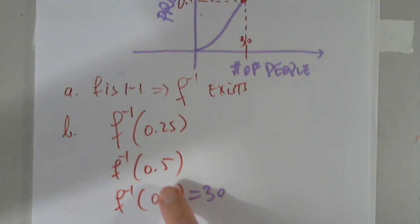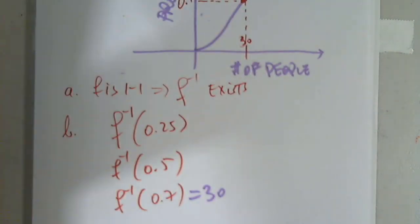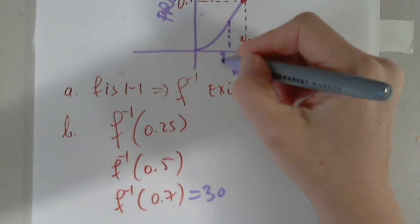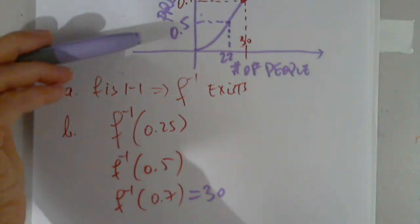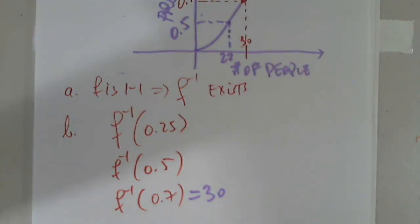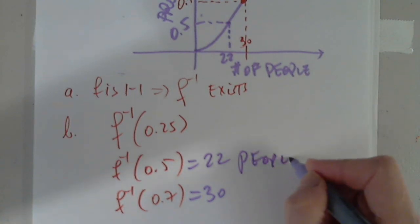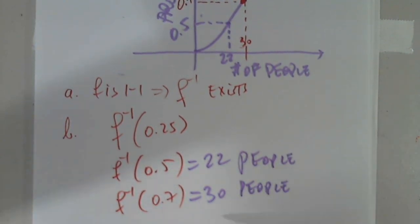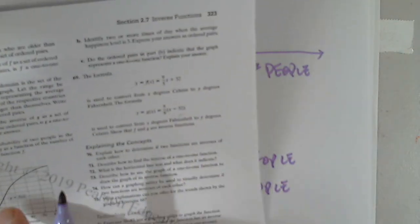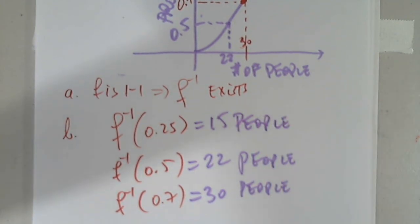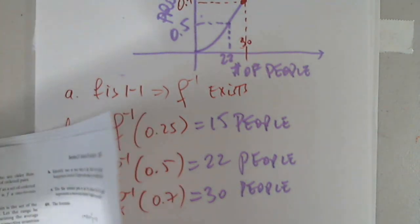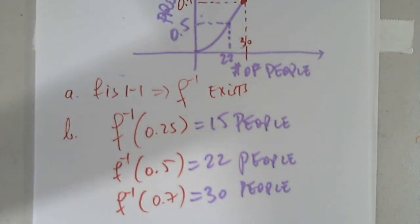If we only want 50%, if we only want 50%, then it's about 22. If this is 22, and this is 0.5%. So, F inverse of 0.5 is 22 people. And for 25%, for 25%, roughly 15 people. So, it's analyzing the function going backwards.